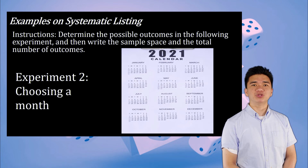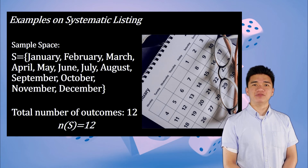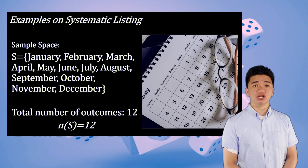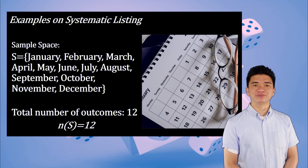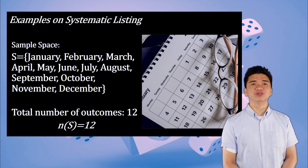Experiment 2: Choosing a month. The sample space is S = {January, February, March, April, May, June, July, August, September, October, November, December}. The total number of outcomes is N(S) = 12.